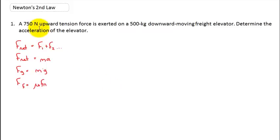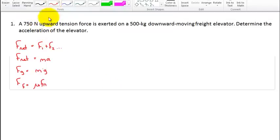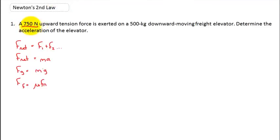So once again, the first thing I think it's important for us to do is to key in on the variables that are key here. We got a 750 Newton upward tension force, so we have a force of tension acting on this elevator that is FT equals 750 Newtons.